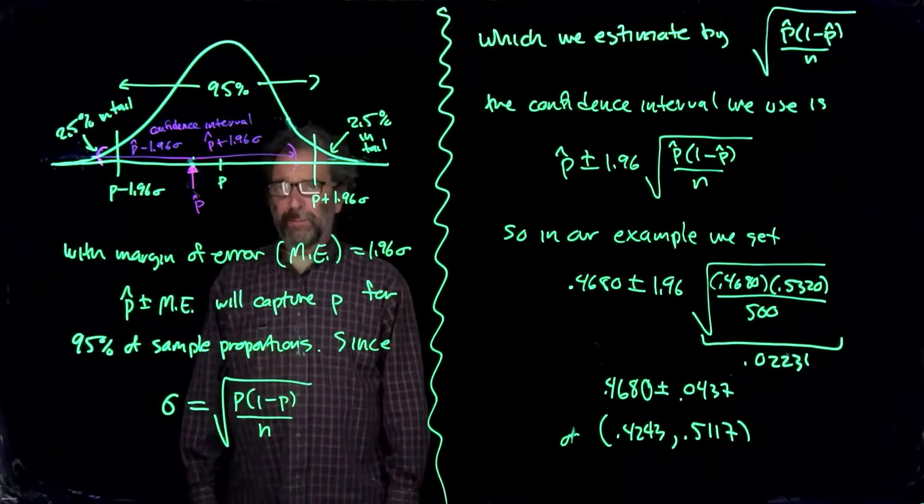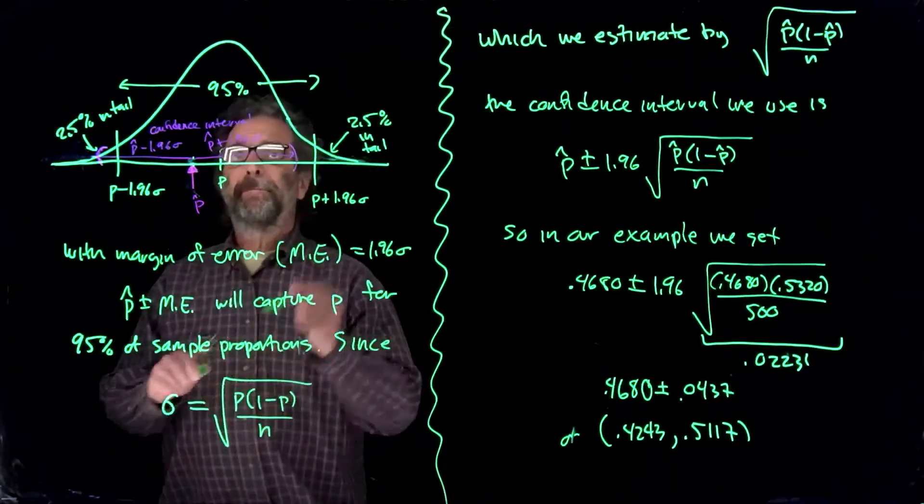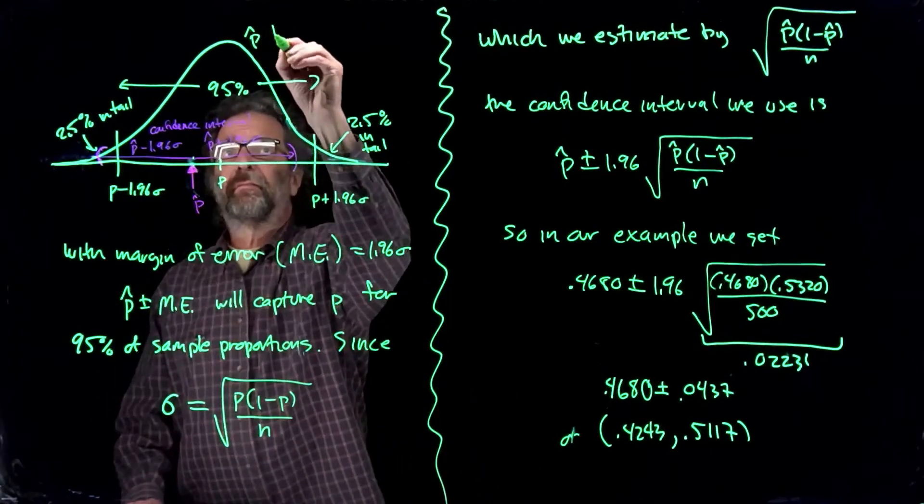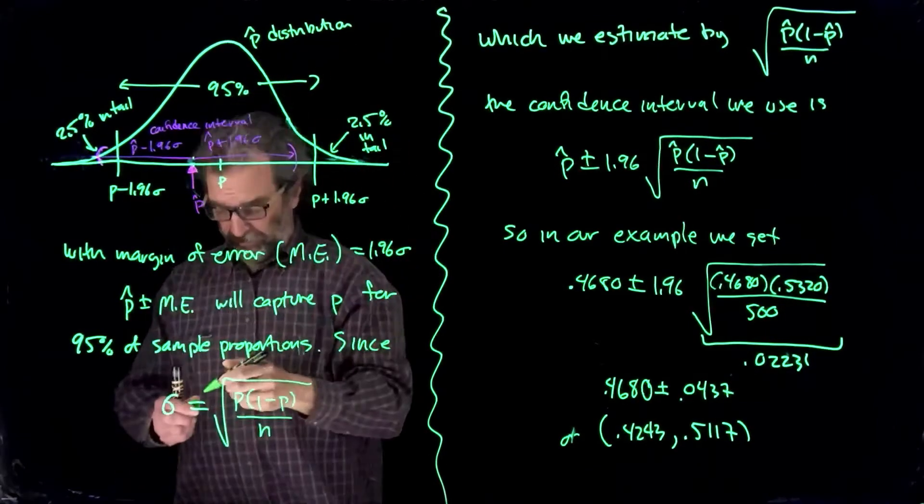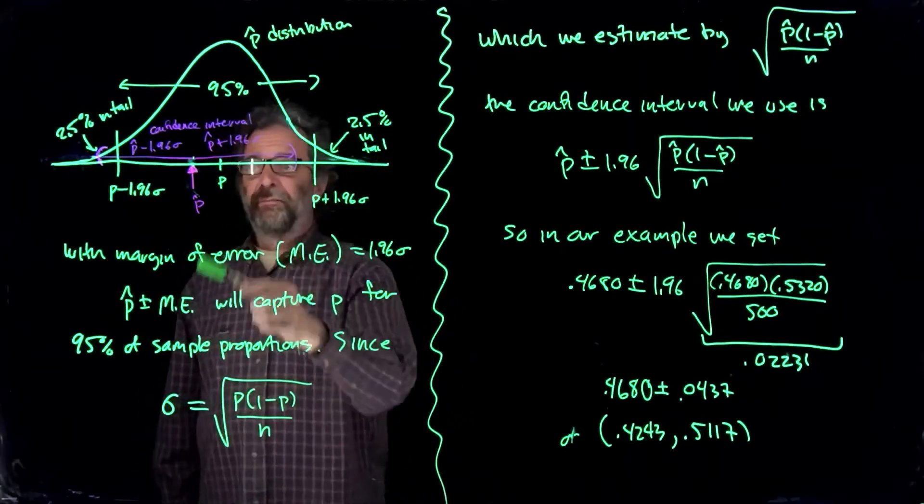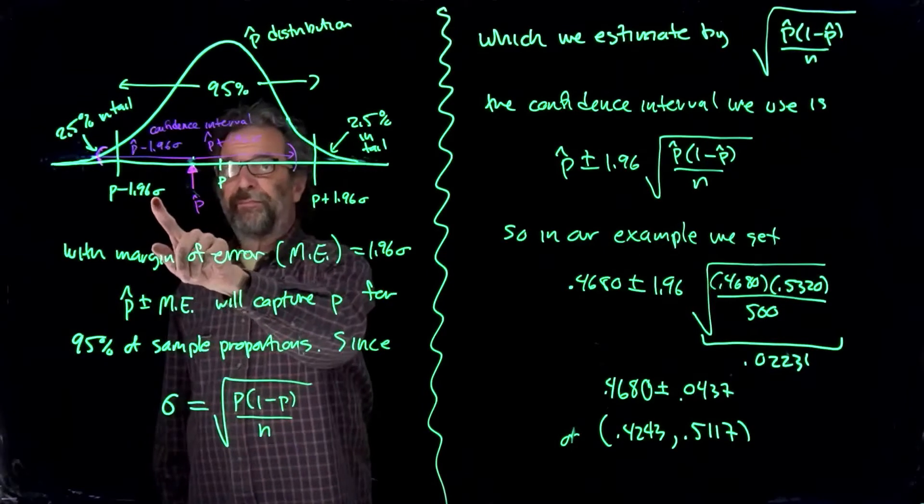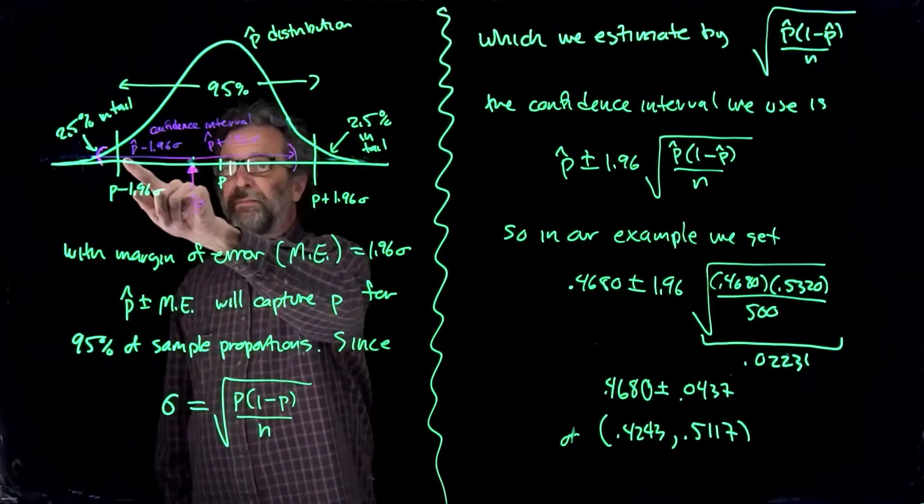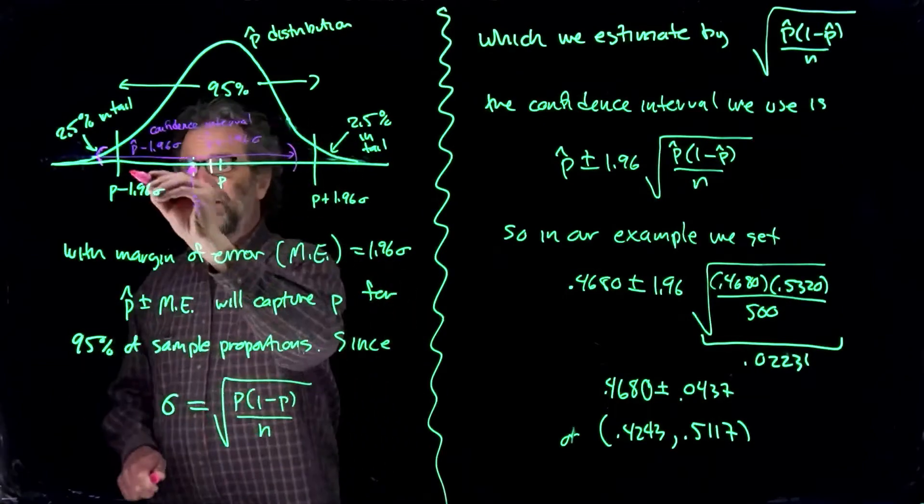So we're continuing our thinking. So here's the distribution of p hat. We're thinking approximately normal centered on p. So that means if we go plus or minus 1.96 sigma, that'll be 95% of the p hats that fall in this range here.